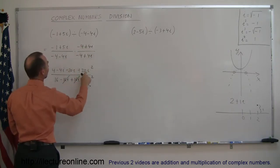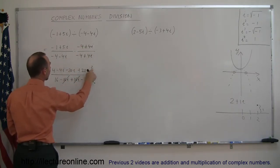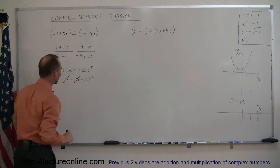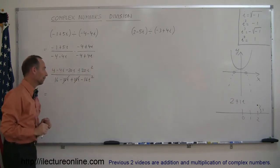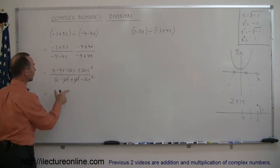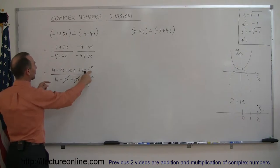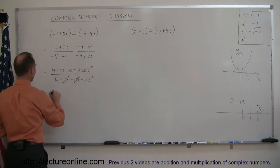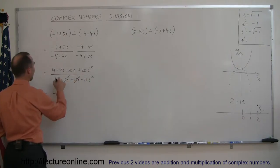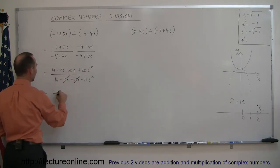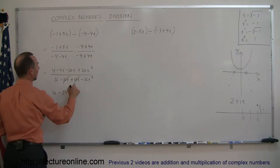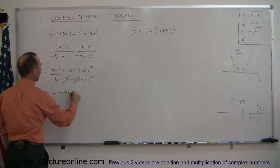5i times 4i is actually 20i squared — don't forget the i squared there. Now adding the two middle terms together, and since i squared becomes negative 1: we have 4 minus 4i minus 20i, which is minus 24i. And 20i squared becomes minus 20.